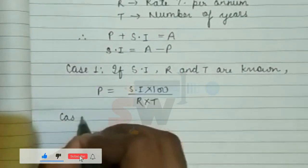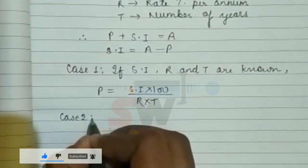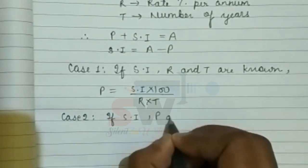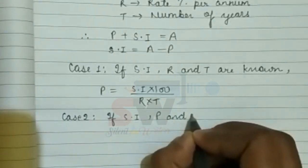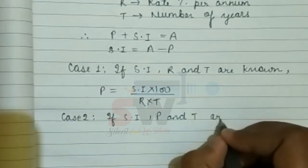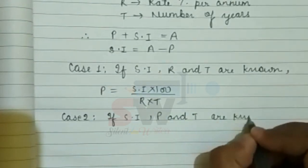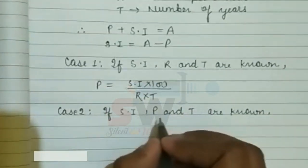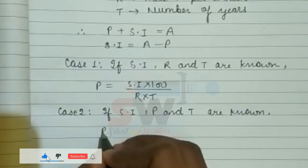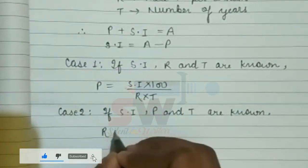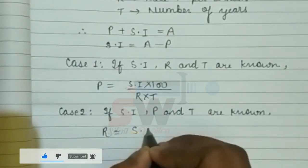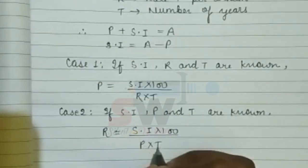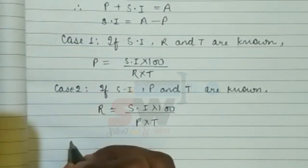Case 2: If SI, P, and T are known, then R equals SI × 100 divided by P × T.